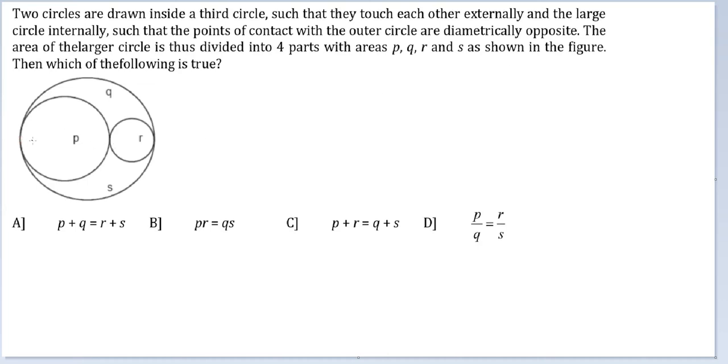Which means the centers of all three circles lie on the same line. This is what is going on. The area of the larger circle is thus divided into four parts: P, Q, R, and S as shown in the figure. Which of the following is true?